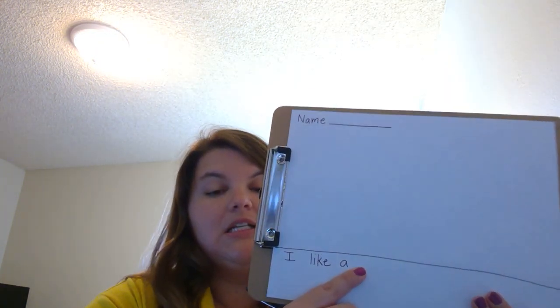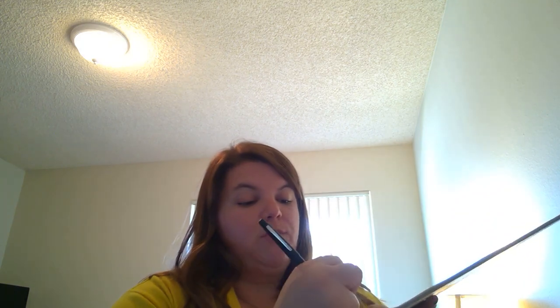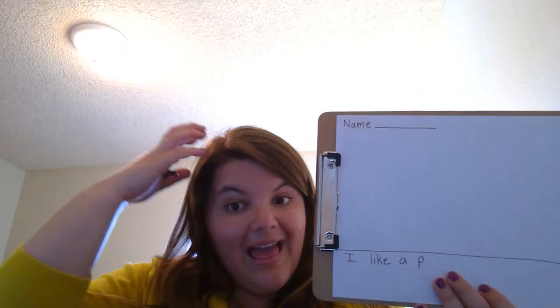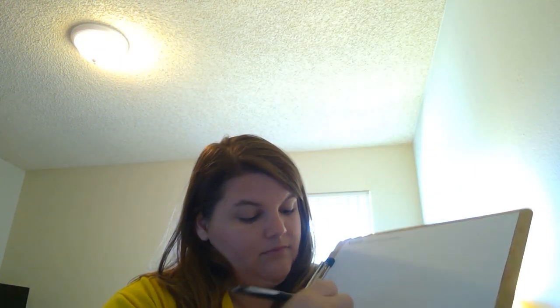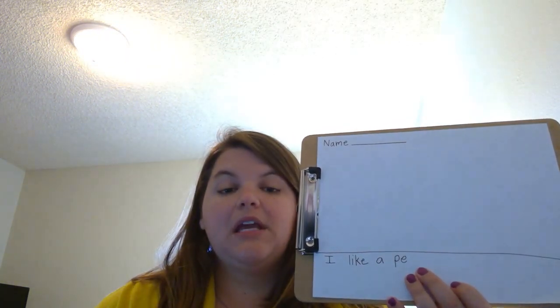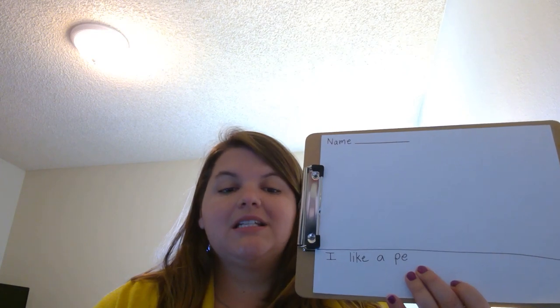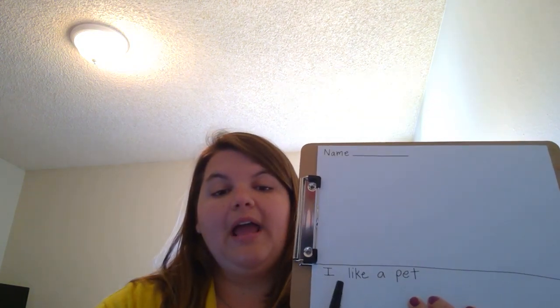'Pet' — that's not a sight word, so I need to stretch it and sound it out. First I need a finger space. Puh — I hear a P. Eh, eh — I hear my egg card. Pet — the last sound I hear is T, like my turtle card. So so far I have: 'I like a pet.'